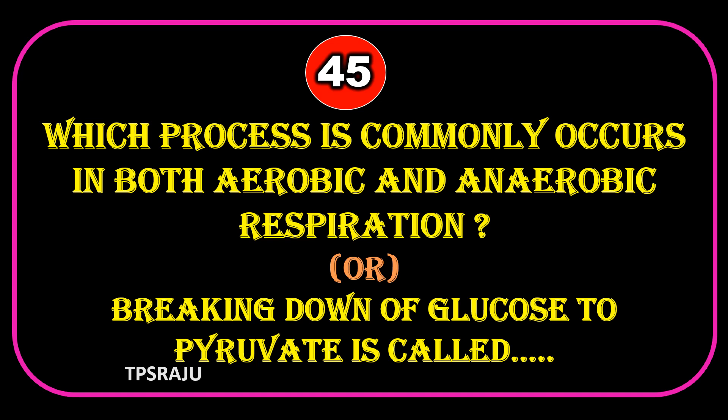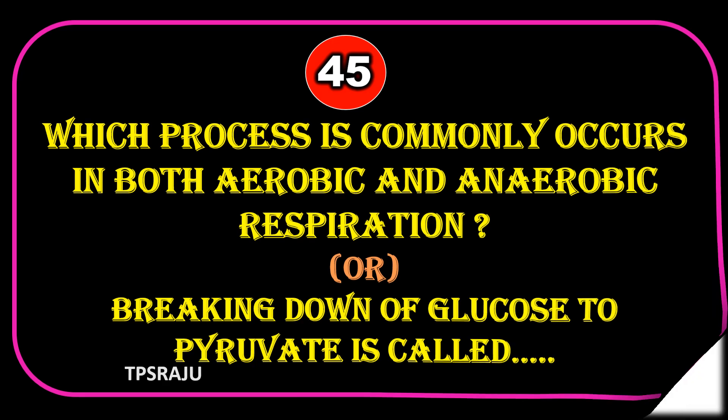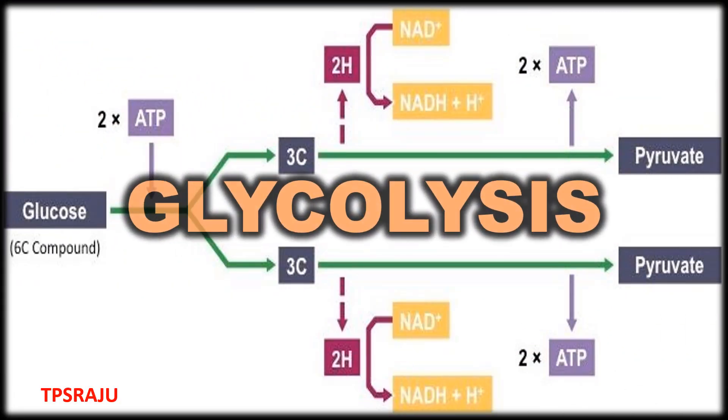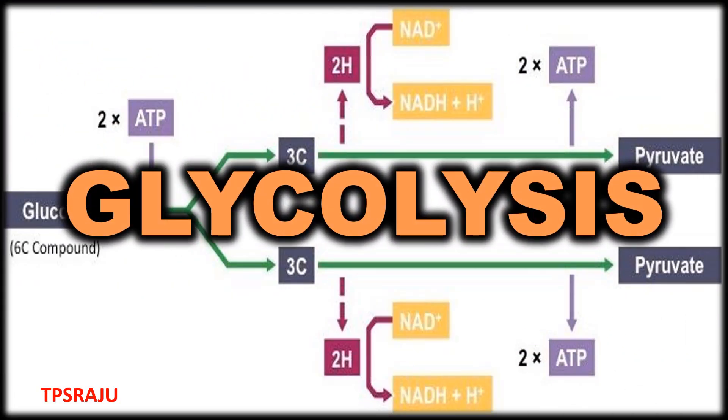Which process commonly occurs in both aerobic and anaerobic respiration? Or, the breaking down of glucose to pyruvate is called glycolysis.